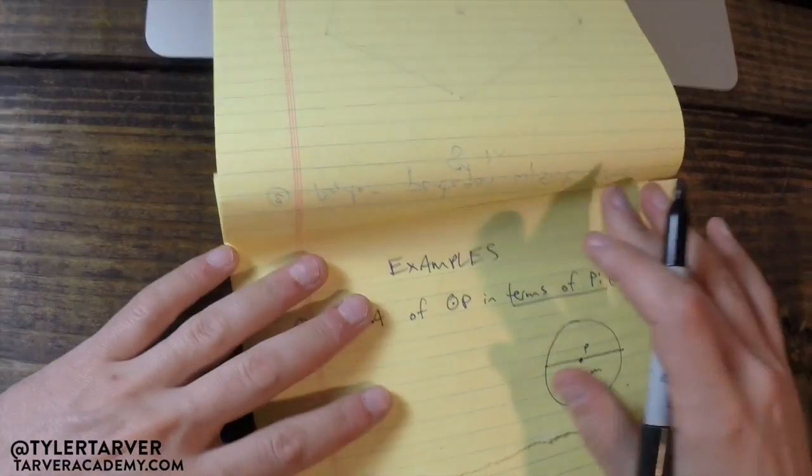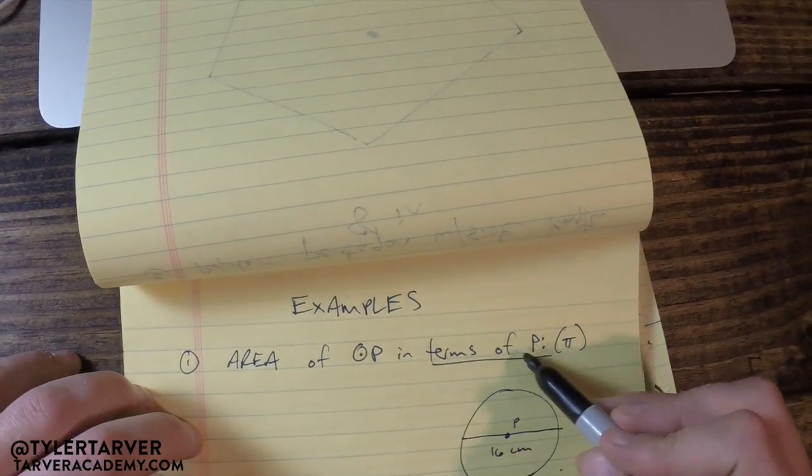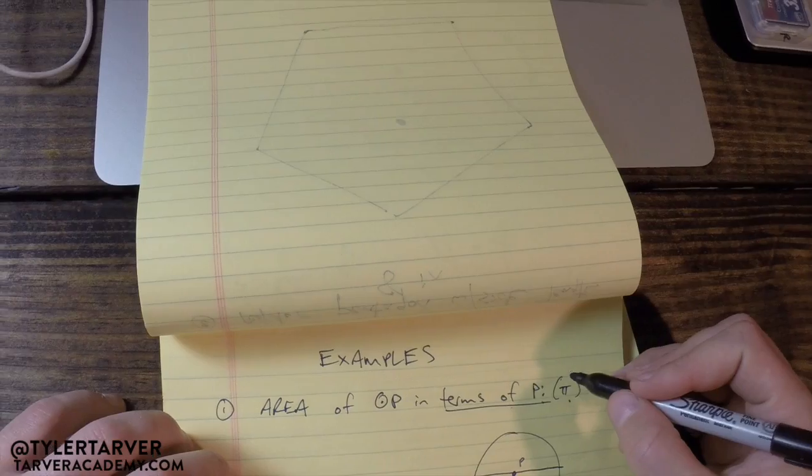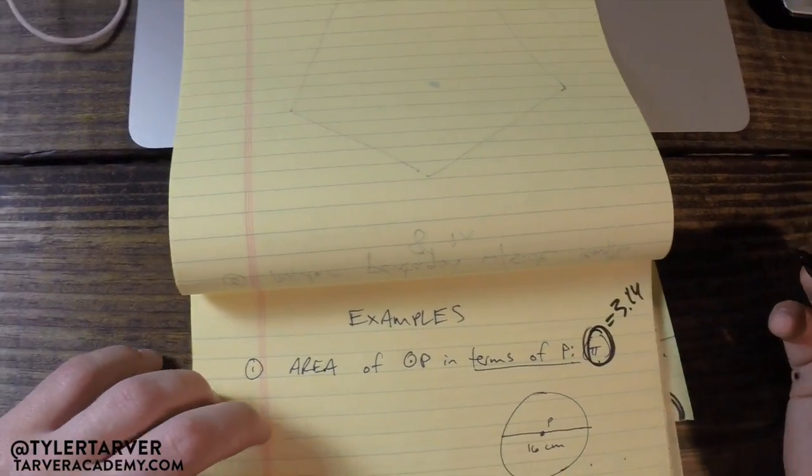So let's look first at an example of find an area of circle P in terms of pi. That means we're not going to use this as 3.14. We're just going to leave it as pi.